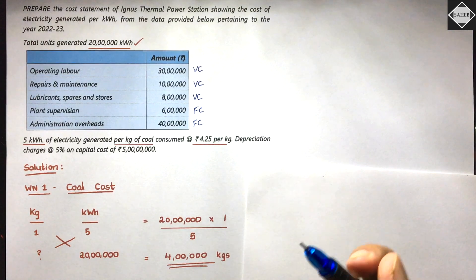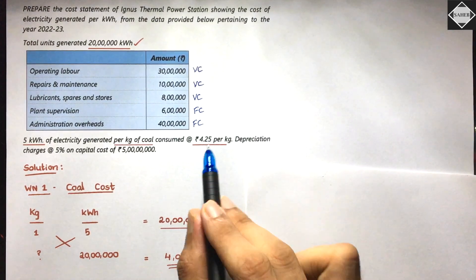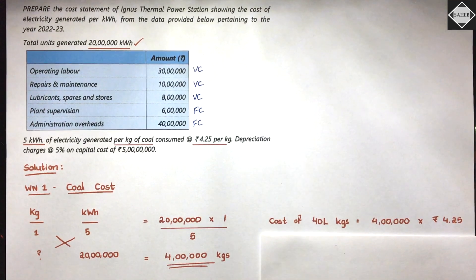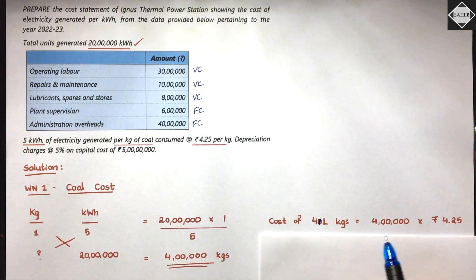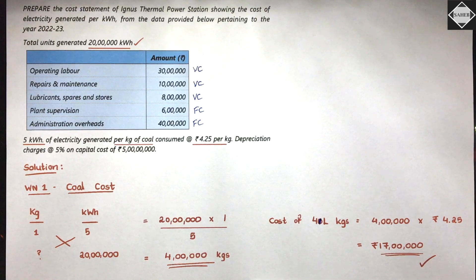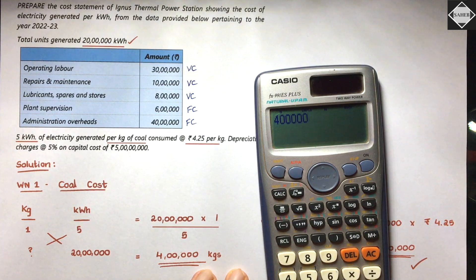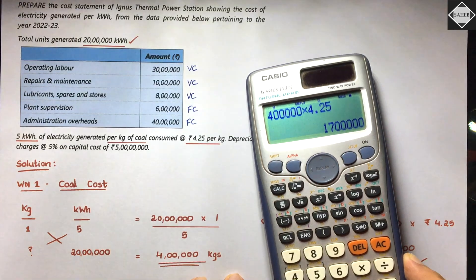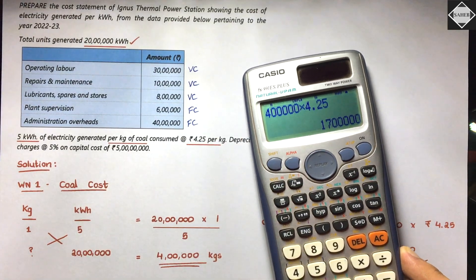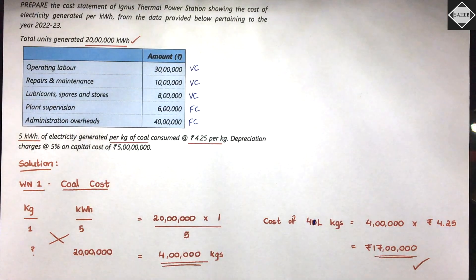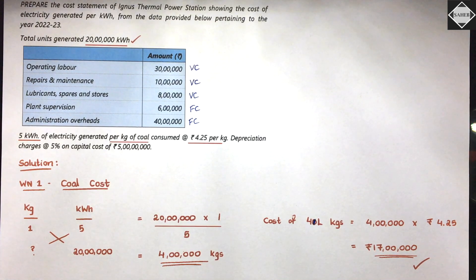Now we multiply the coal quantity by the rate: 4 lakh kg × ₹4.25 = ₹17 lakhs. So the coal cost is ₹17 lakhs, which is a variable cost and will be entered in the cost statement accordingly.